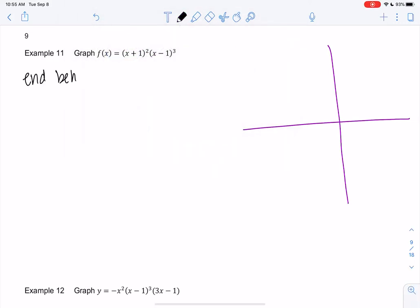End behavior, we need the leading term. I don't want to multiply this out. If you want to, you can. But if you multiply this out, you have x plus 1, x plus 1, x minus 1, x minus 1, x minus 1. It's going to be really annoying to multiply out. But I can figure out the leading term without multiplying it out.